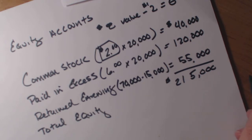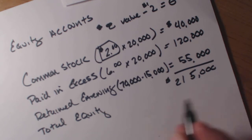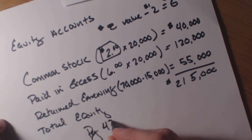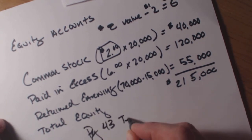That is the total equity for the company. If you want to see this illustrated, it is on page 43 in the textbook.